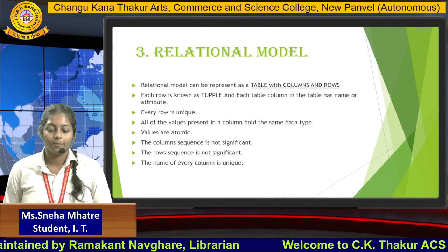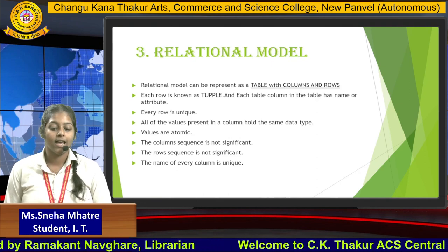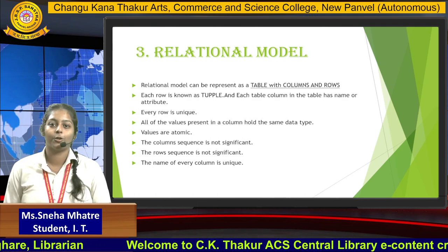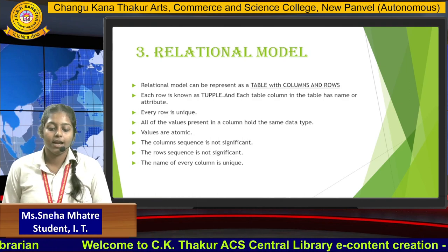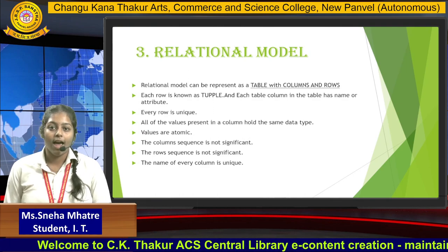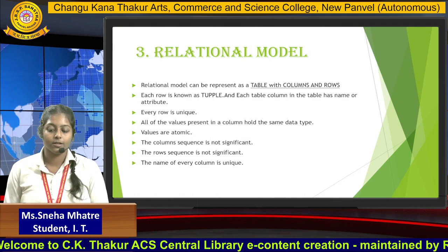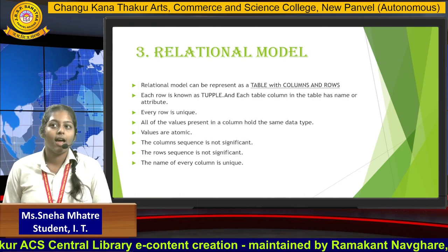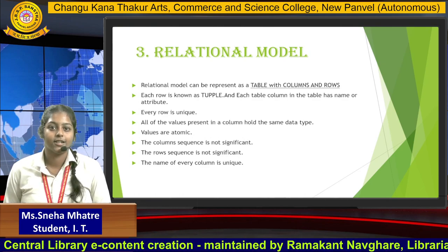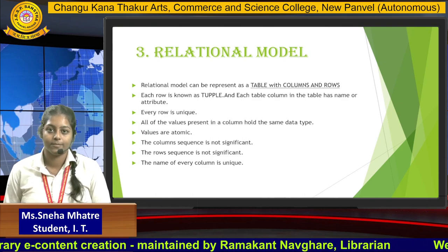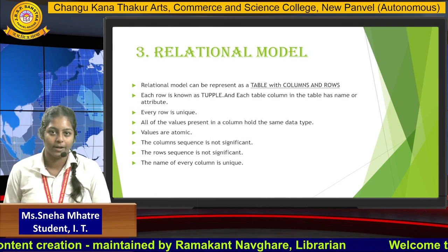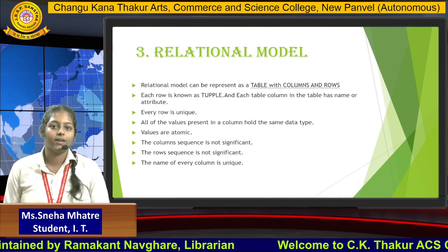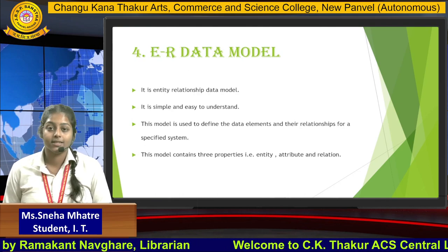Moving to the next data model: the relational data model. In the relational data model, data can be represented as a table with rows and columns. Each row is known as a tuple, and each column has a unique name or attribute. Each row is unique and the columns are atomic, which cannot be separated or repeated. The column sequence is not significant and the name of every column is unique.